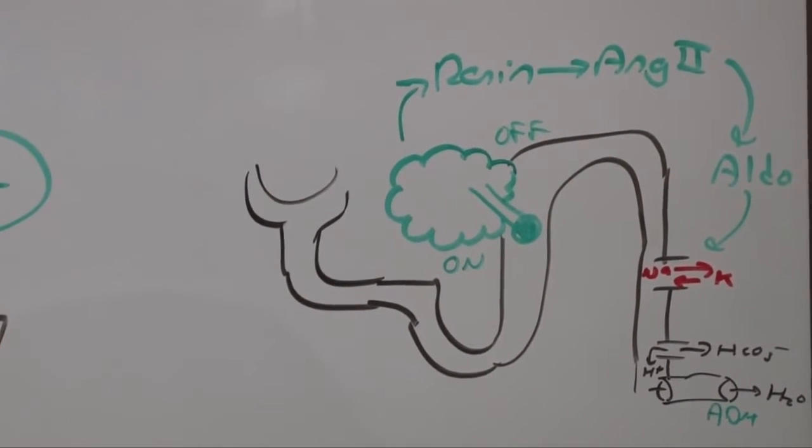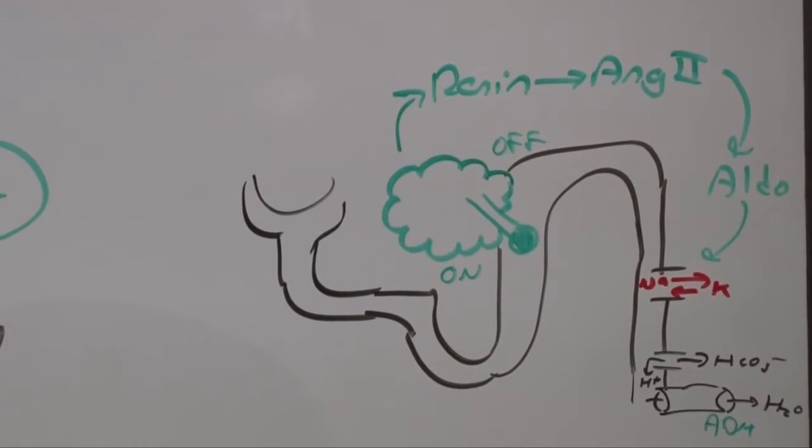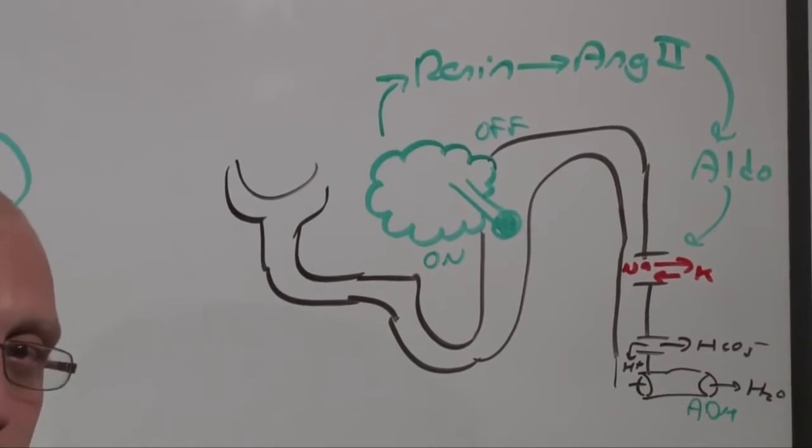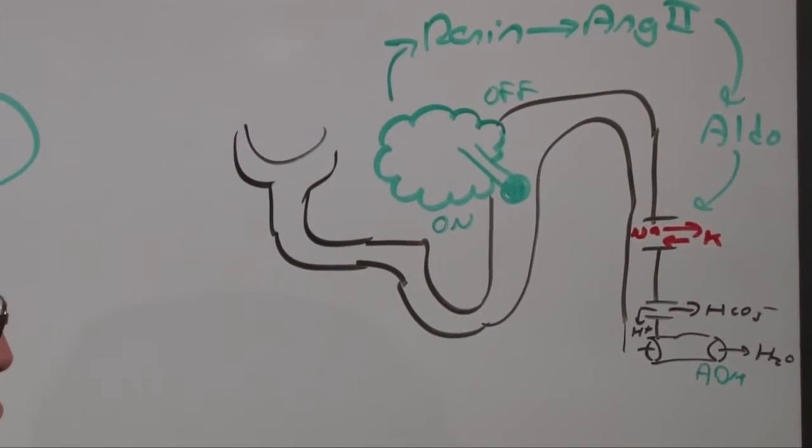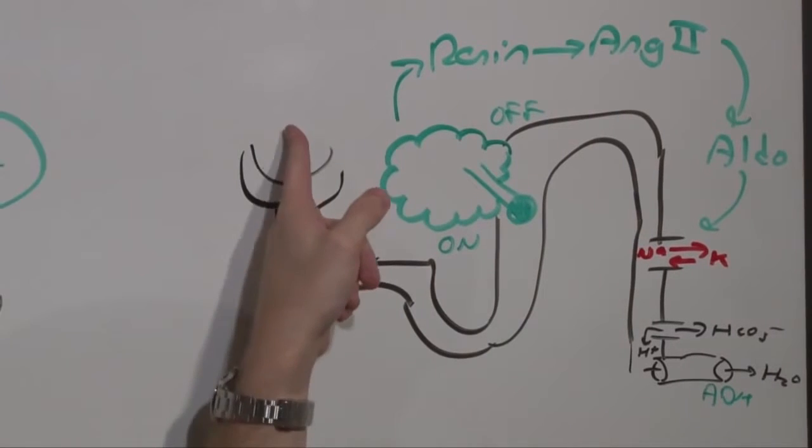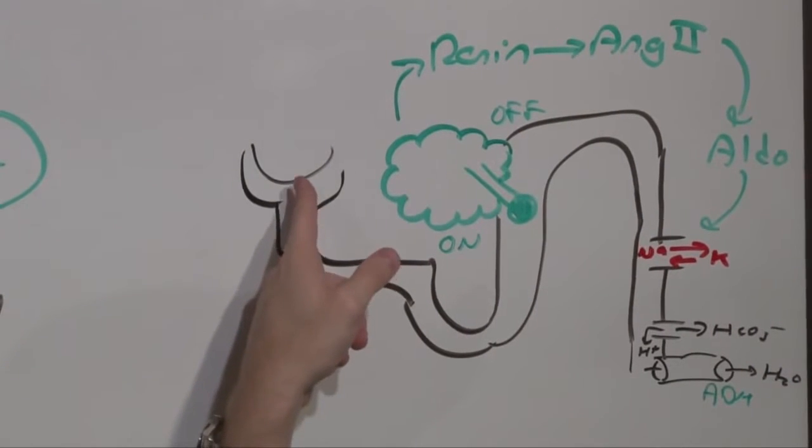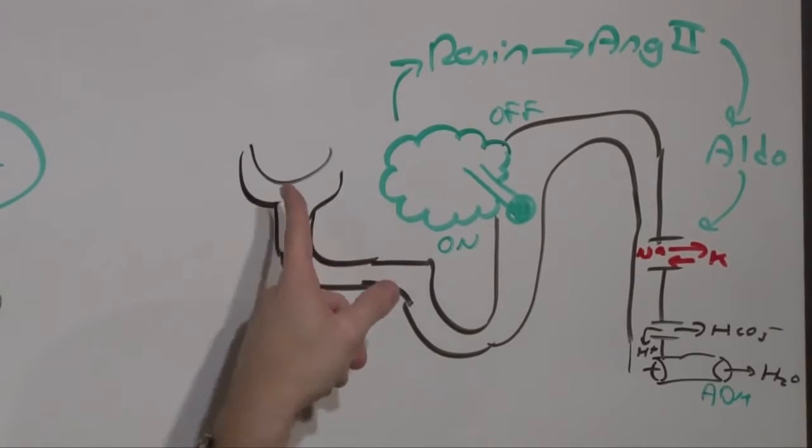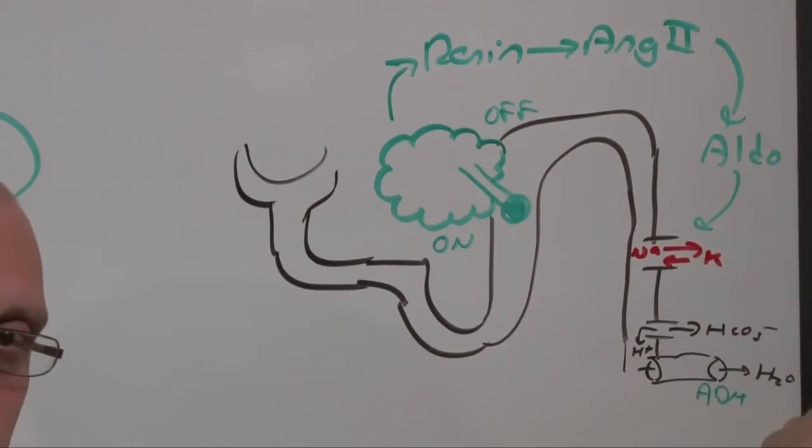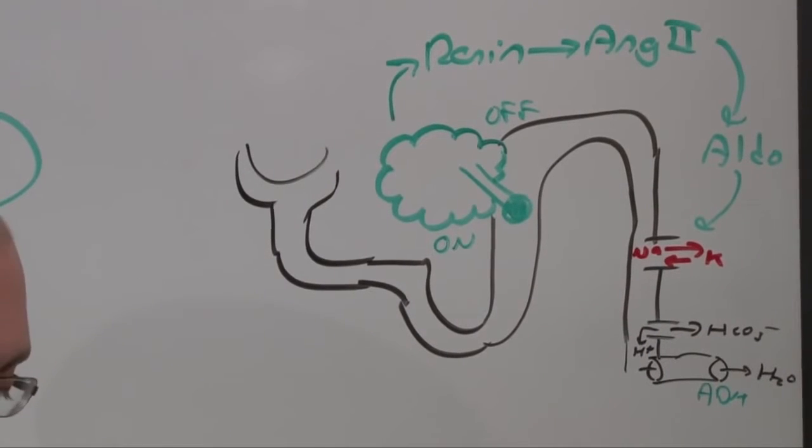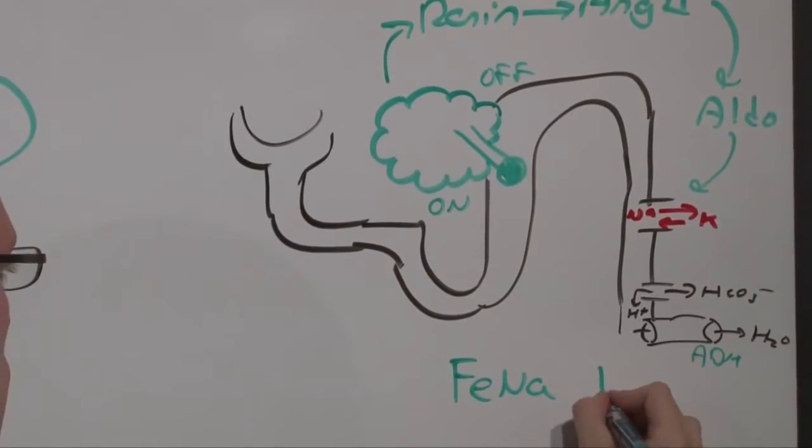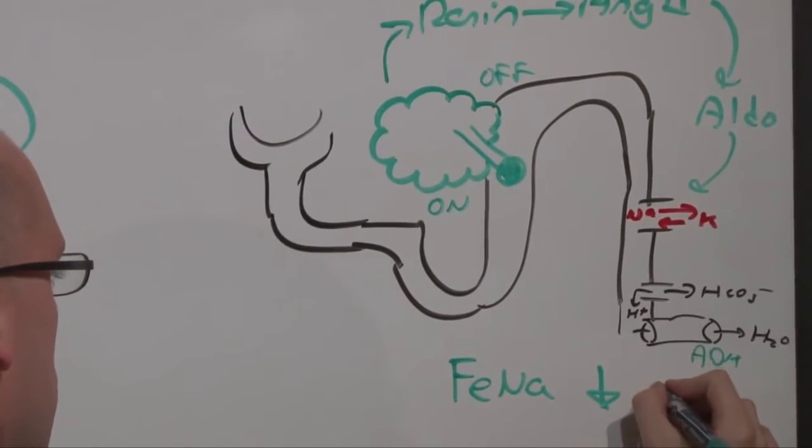In this case, the urine sodium is going to be low. The whole point of the FENA, the fractional excretion of the sodium, is to determine whether or not the kidney is working. The amount of sodium that crosses the glomerulus will be changed. But, if Aldo is working, most of that sodium will be reabsorbed, not lost in the urine. Thus, the fractional excretion of sodium will be low when the kidneys are working.